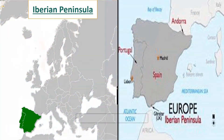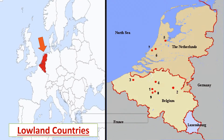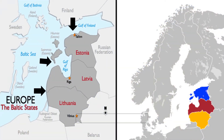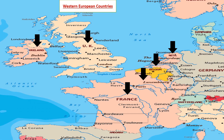The Iberian Peninsula includes Spain and Portugal. Lowland countries, also referred to as Benelux, means Belgium, Netherlands, and Luxembourg. And lastly, in our previous video we discussed Baltic states, which lie on the banks of the Baltic Sea — they include Lithuania, Latvia, and Estonia.